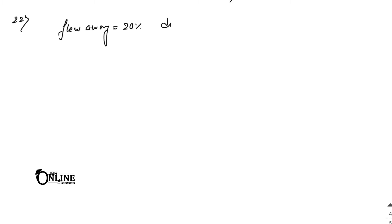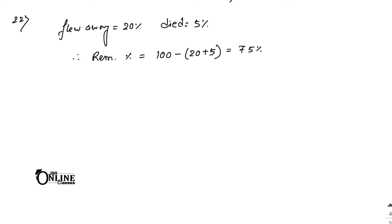Now sum number 22: Chandni purchased some parrots. 20 percent flew away and 5 percent died. So flew away equals 20 percent, died equals 5 percent. The remaining percentage equals 100 minus (20 plus 5), which equals 75 percent.